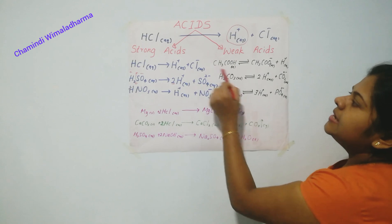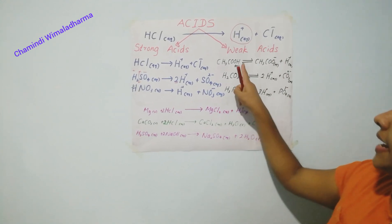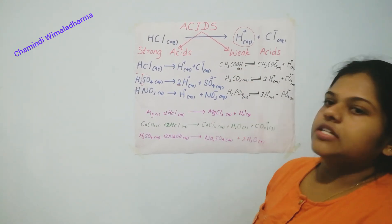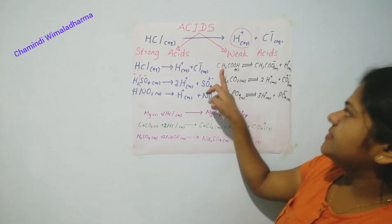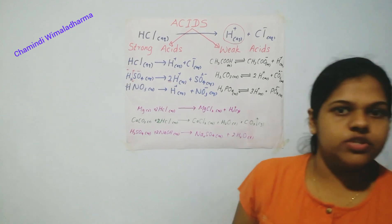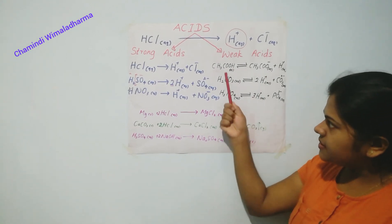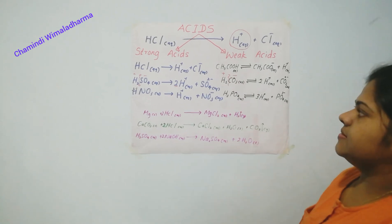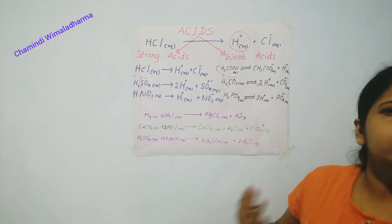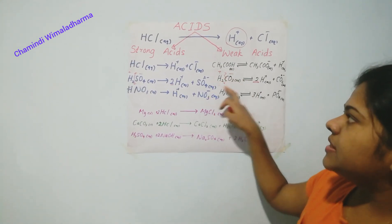In the aqueous solution, when we take Acetic Acid, CH3COOH, it is dissociated into CH3COO- (the negative part) and H+ (the positive part). Through this equation we show that in this medium, there is Acetic Acid as well as the negative part as well as the positive part — always these three components are present in the solution. This is Carbonic Acid, H2CO3. Here also it gets dissociated into H+ and CO3 2-. As there are two hydrogens, we have to balance the equation.